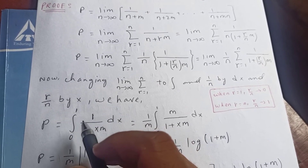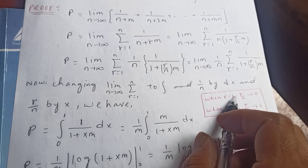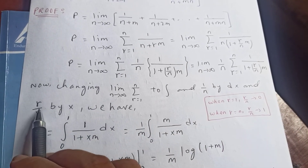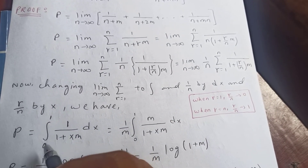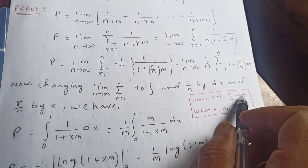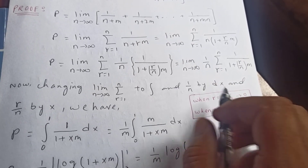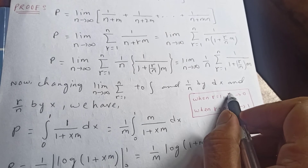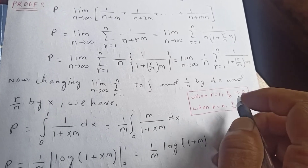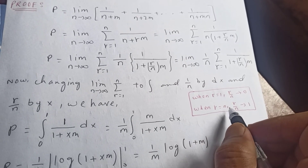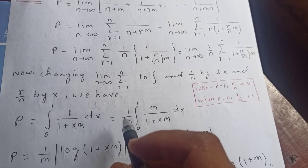Now we determine the upper and lower limits of the integral. Since r/n corresponds to x: when r = 1, r/n = 1/n, and since n tends to infinity, 1/n tends to 0 — so the lower limit is 0. When r = n, r/n = 1 — so the upper limit is 1. The integral runs from 0 to 1.